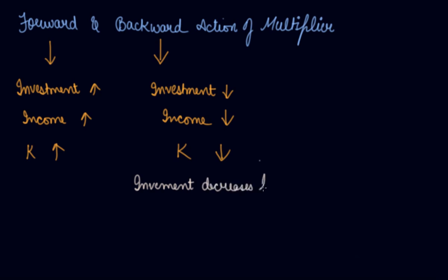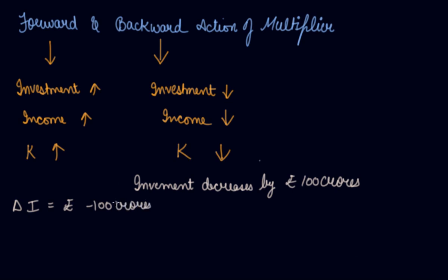Now for the backward action: investment decreases by rupees 100 crores, which means your change in investment is rupees minus 100 crores because it is decreasing. MPC is given as 0.5, so you can calculate your multiplier K: 1 divided by (1 minus 0.5), which gives K = 2.